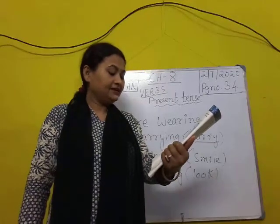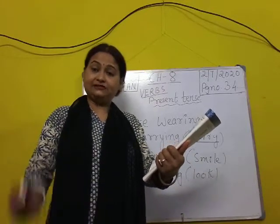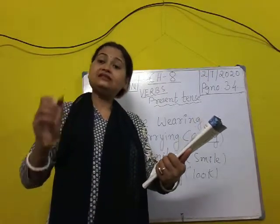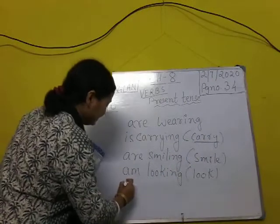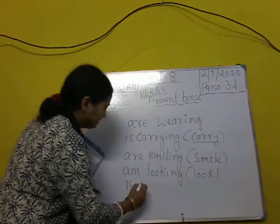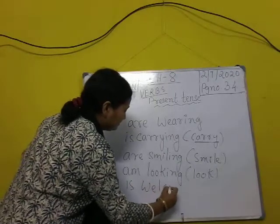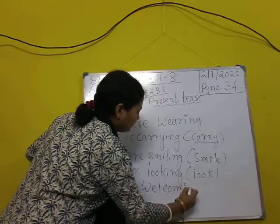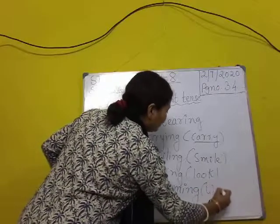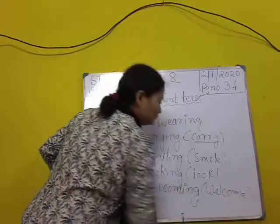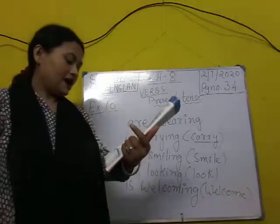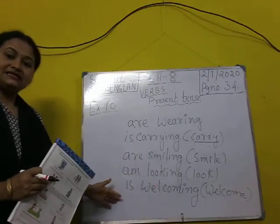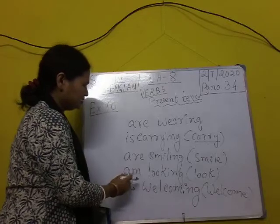Aunt Rajini dash — the verb given in the bracket is 'welcome'. So what we will write is: Aunt Rajini is welcoming — W-E-L-C-O-M-I-N-G — my mother. 'Welcome' is the root word. So: Aunt Rajini is welcoming my mother. This is how we do this fill-in exercise.